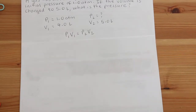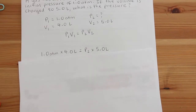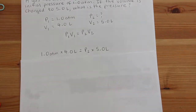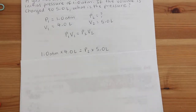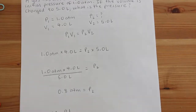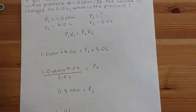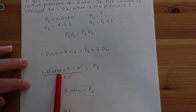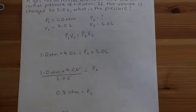Write down the equation: P1V1 equals P2V2. Filling in the values: 1.0 atmospheres multiplied by 4.0 liters equals P2 times 5.0 liters. We want to get P2 by itself, so we divide both sides of the equation by 5.0 liters. The liters cancel — if you have the same unit on both top and bottom, it cancels — leaving only atmospheres. Punching that into the calculator gives us a final answer of P2 equals 0.8 atmospheres.